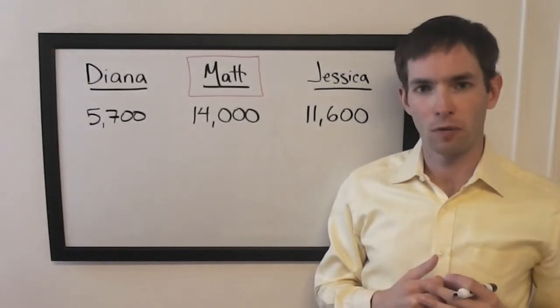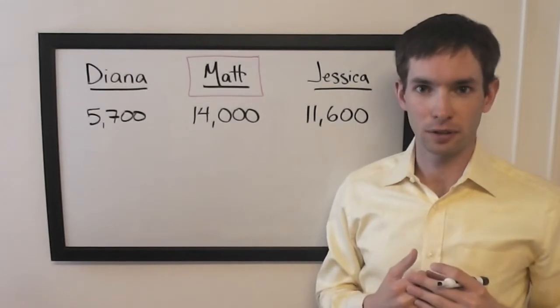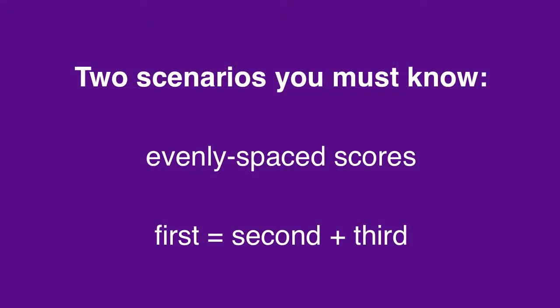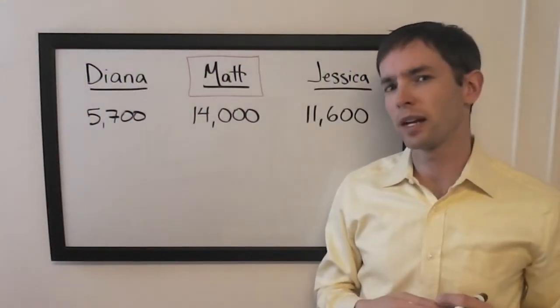Now, if you think back to part four of my wagering tutorial, I listed two three-player situations in which the leader has to wager for a tie: evenly spaced scores, and first equals second plus third. We could do some math here, but it's very difficult to do that on the fly.